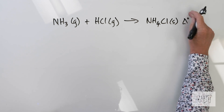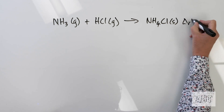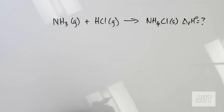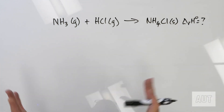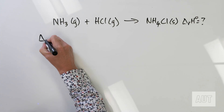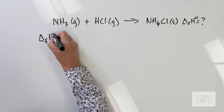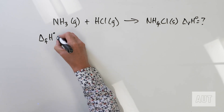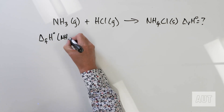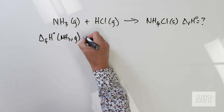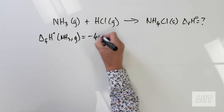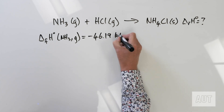So delta RH standard is equal to what for that particular reaction? What data are we going to be given? We're going to be given standard enthalpy of formation data — delta FH0. For ammonia, that is equal to minus 46.19 kJ per mole.